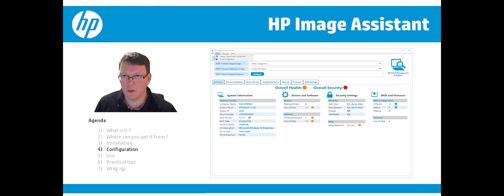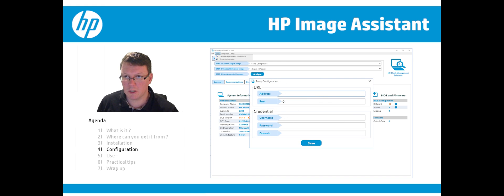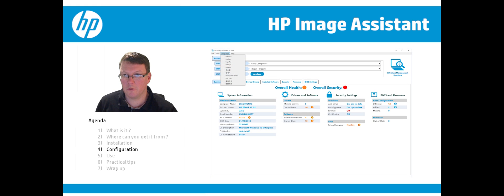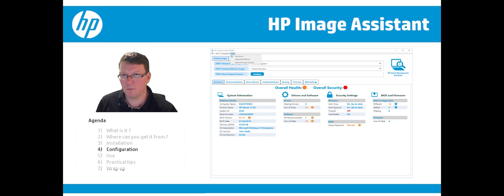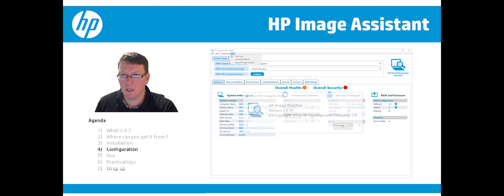In the upper left corner you can click on Tools, where you can capture the target image configuration or change the proxy configuration if you need proxy settings to access the internet. You can also change the language, as several languages are supported. Under Help, you can visit the forum for specific issues or questions, go directly to the supported platforms page, and check the version of HP Image Assistant.